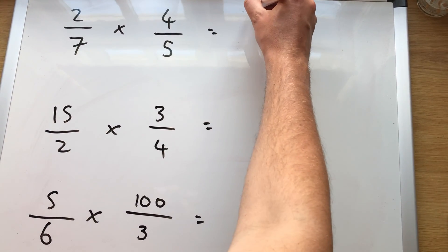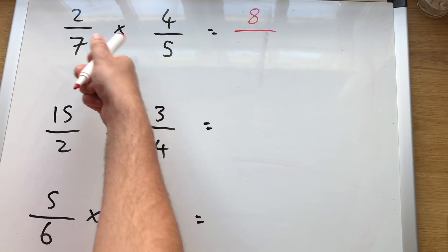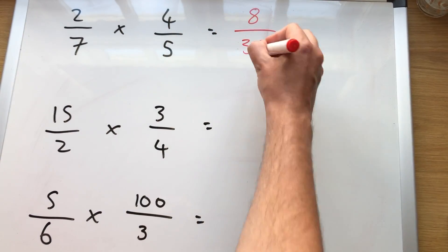2 times 4, 8. Multiply the top, multiply the bottom. 7 times 5 is the bottom, 35. We're done.